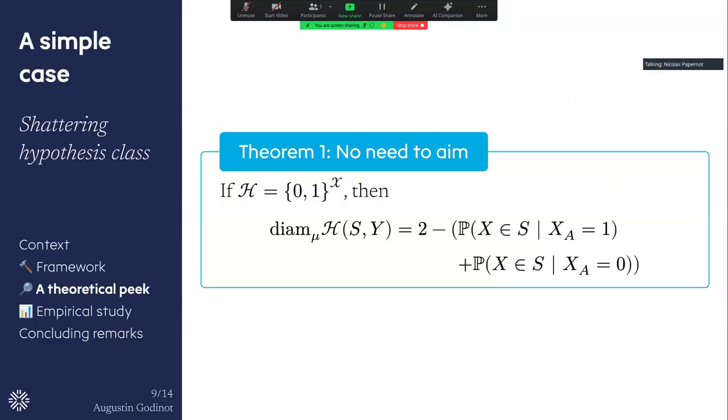So the first hypothesis class that we considered here is what could be the perfect data scientist hypothesis class, the perfect model, a model that could be able to fit any labeling of the input space. So here we assume that the input space is finite, so this could for example happen. So this type of hypothesis class could be a model with a lot of parameters compared to the size of the data.